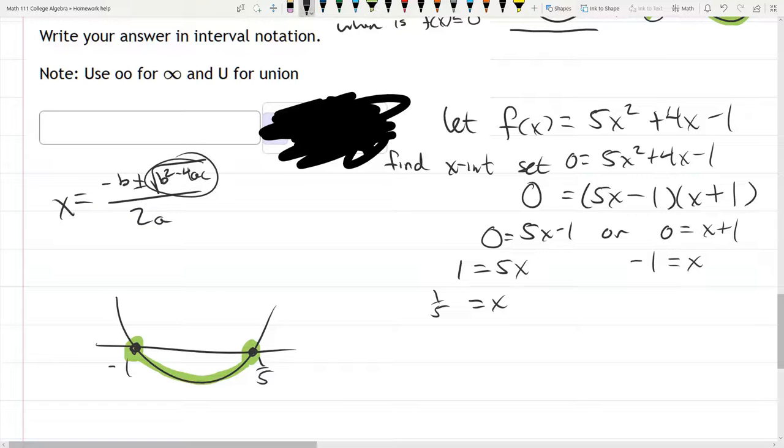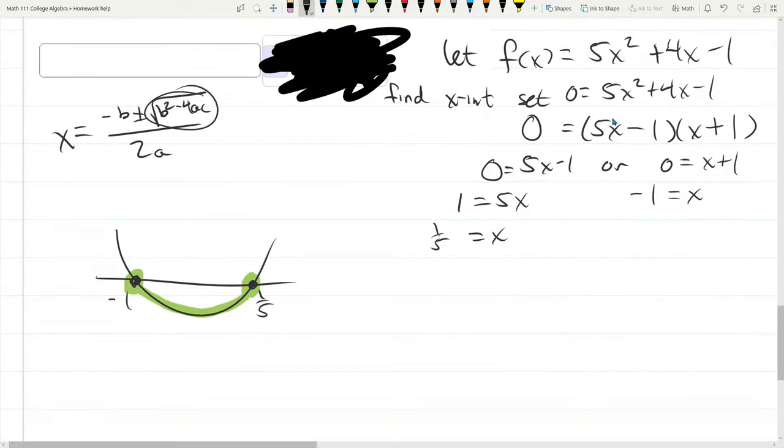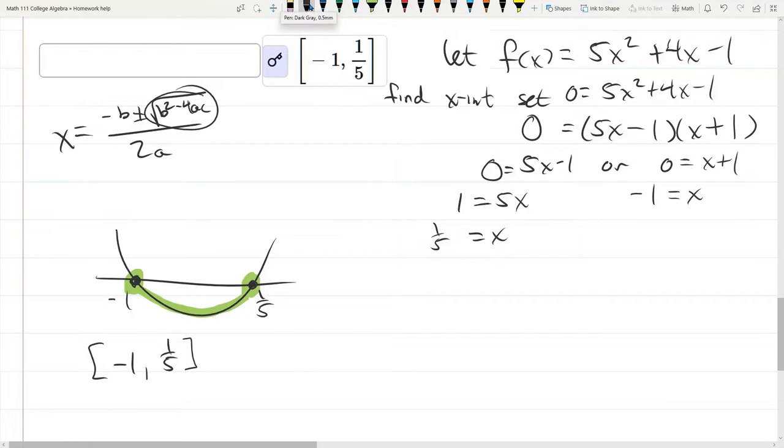And now, I've highlighted all the x values that are the answer. And I'm going to write them in interval notation. Negative 1 comma 1 fifth. I include both negative 1 and 1 fifth. So it's closed interval. And you'll see that right there. So that's how to solve this one.